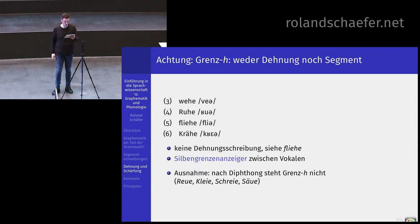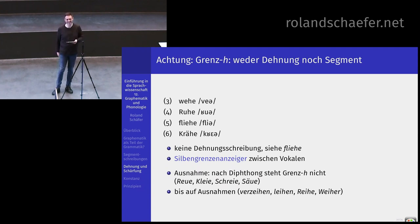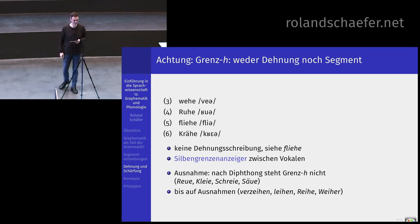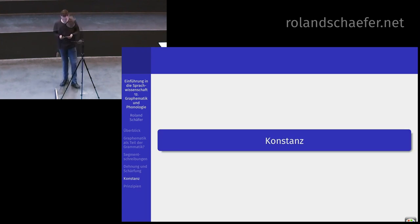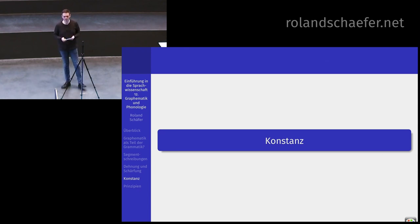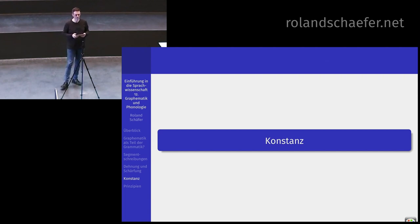Der Glottalplosiv kann nicht kommen, weil die zweite Silbe, deren scheinbarer Anlaut dieses H ist, unbetont ist – in der Wortmitte, in der Stammmitte. Und an der Stelle wird gerne dieses H als Grenzanzeiger benutzt. Nach Diphthong steht das nie: Reue, Kleie, Schreie, Säue – bis auf Ausnahmen in Verzeihen, Laien, Reihe und Weihe. Und dann die Konstanzschreibung. Ich erinnere Sie an die unerklärten Doppelkonsonanten von vorhin: Kinn, Schutt, Bett, Rock, Watt.